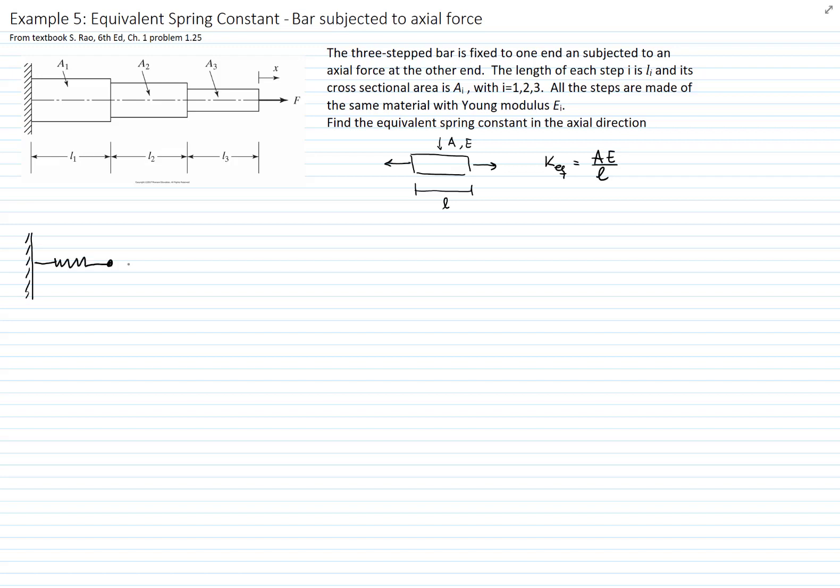Since we have three bars, one following the next one, we will have a system equivalent as if we would have three springs in series. And we want to find the equivalent constant for those three springs in series.